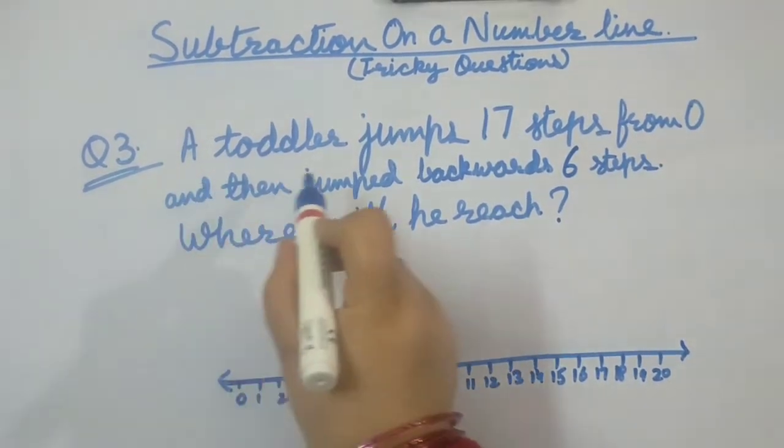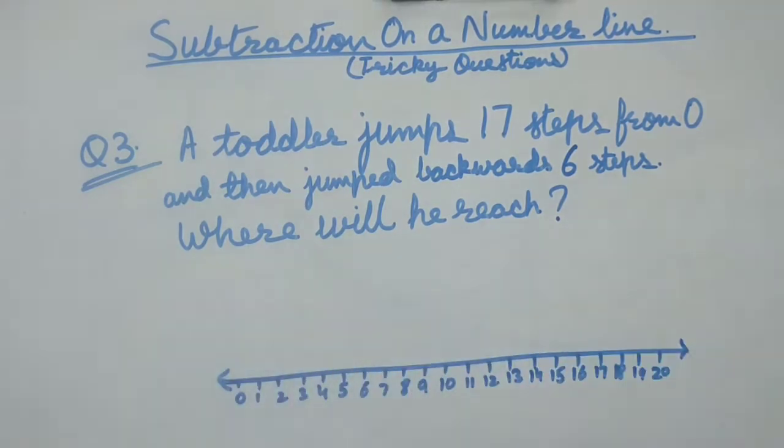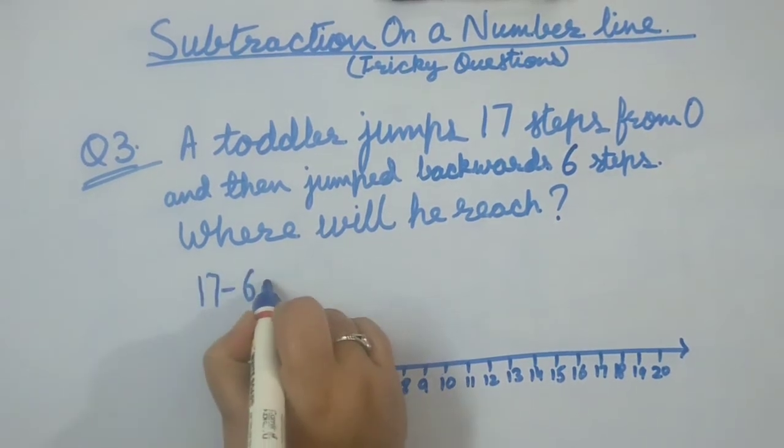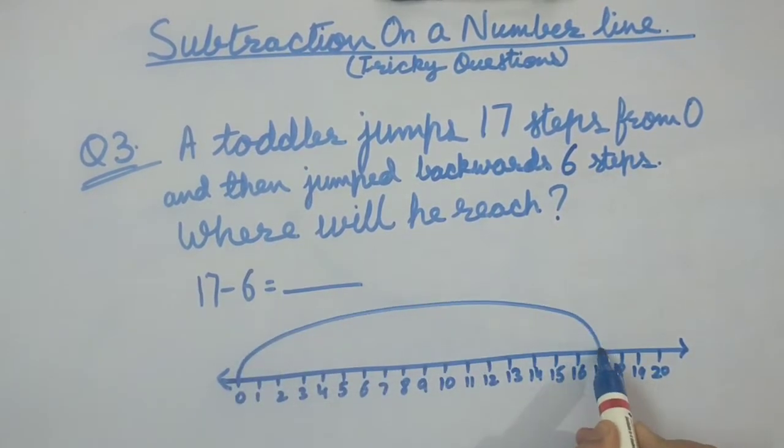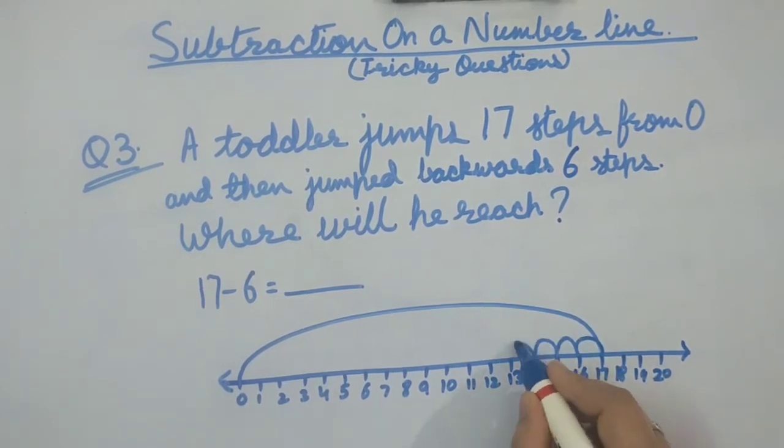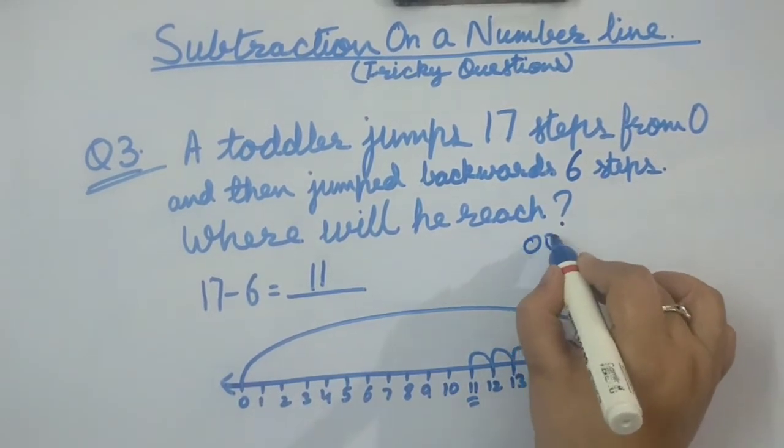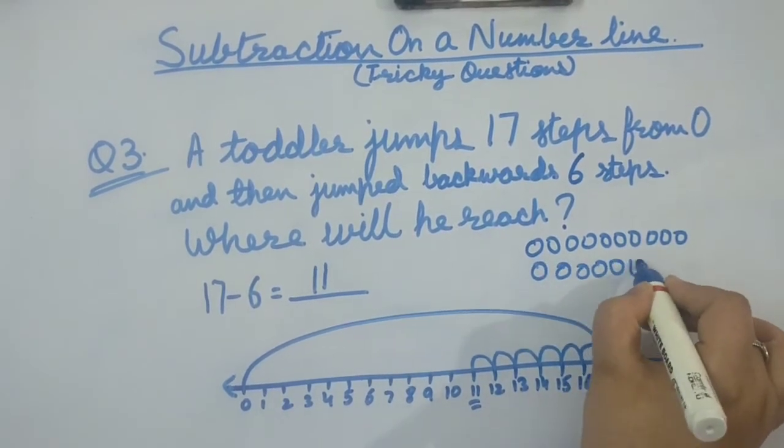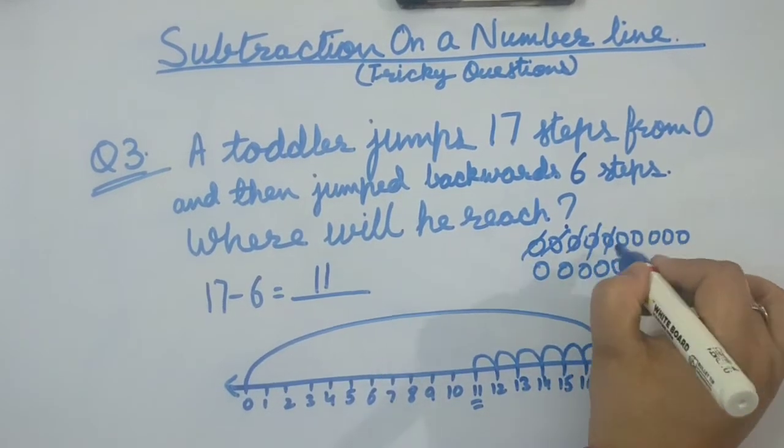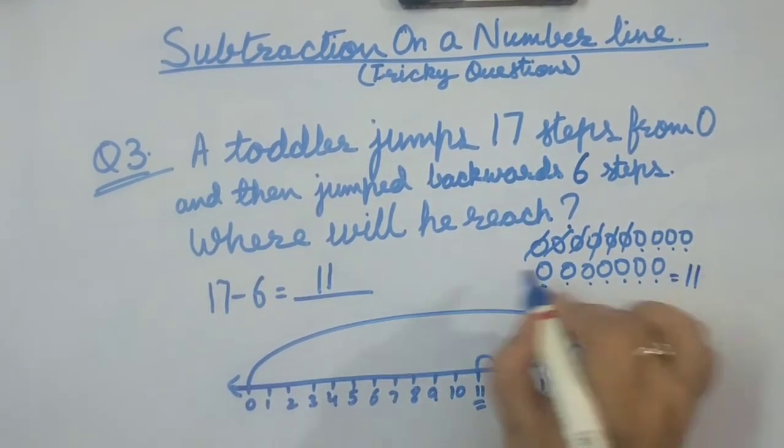Question number 3. A toddler jumps 17 steps from 0 and then jumped backwards 6 steps. Where will he reach? We will take out the question: 17 minus 6 equals to dash. Starting from 0, counting forward to 17, then backwards 6 steps to reach 11. Yes, our answer is correct.